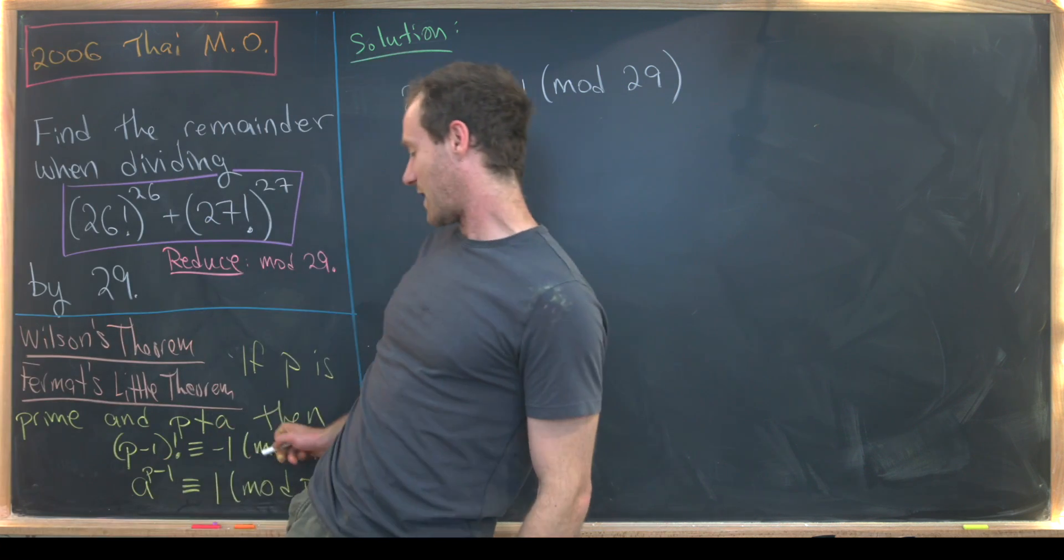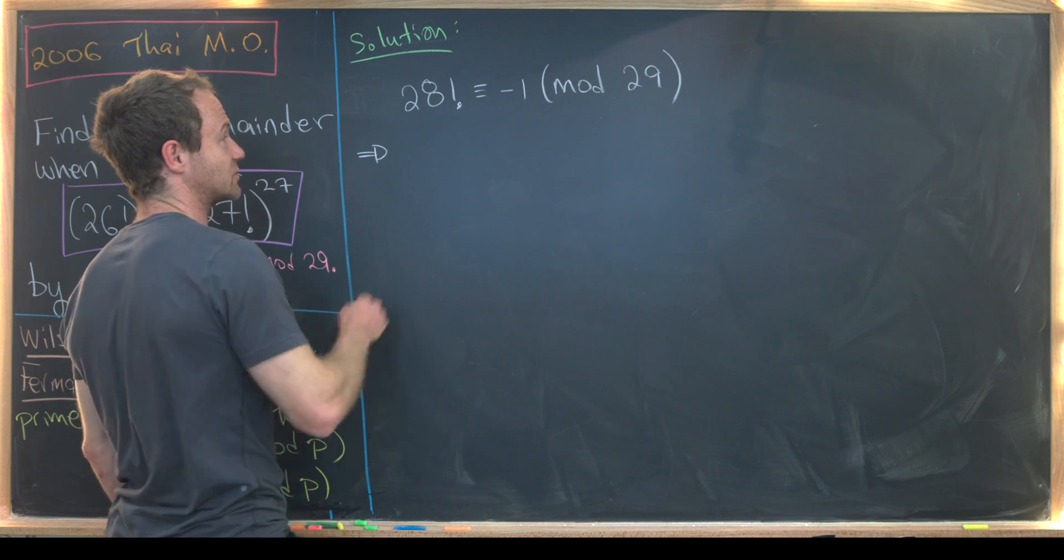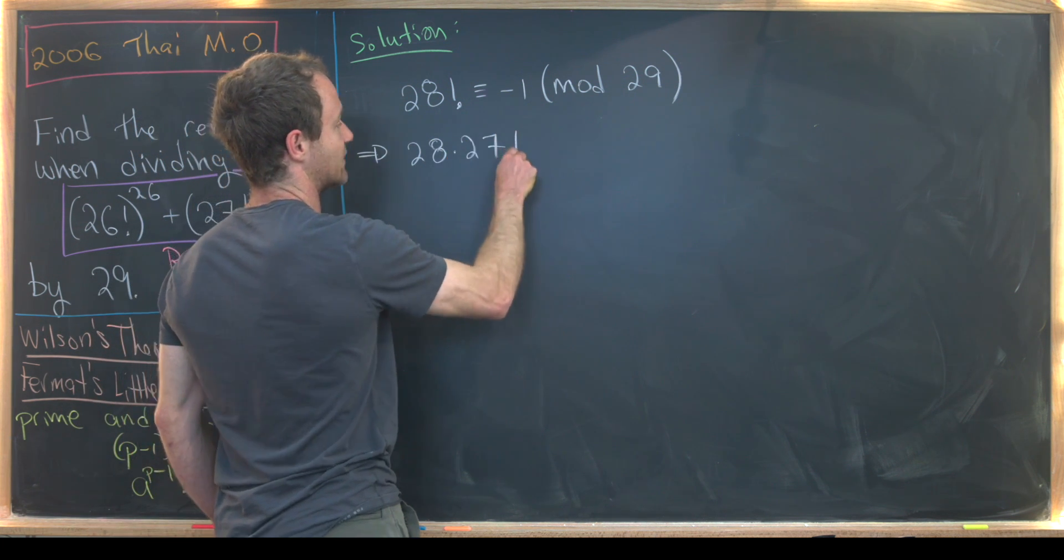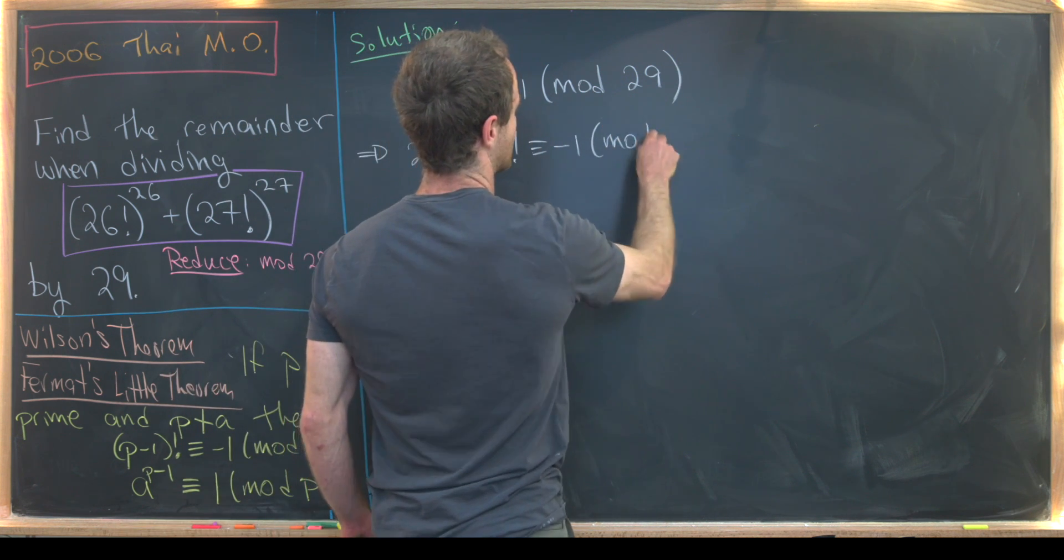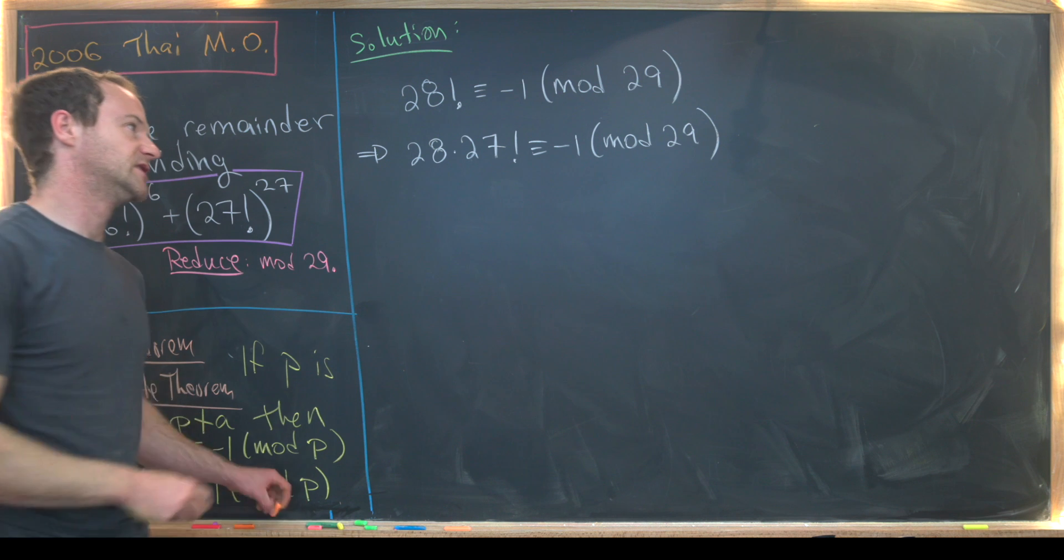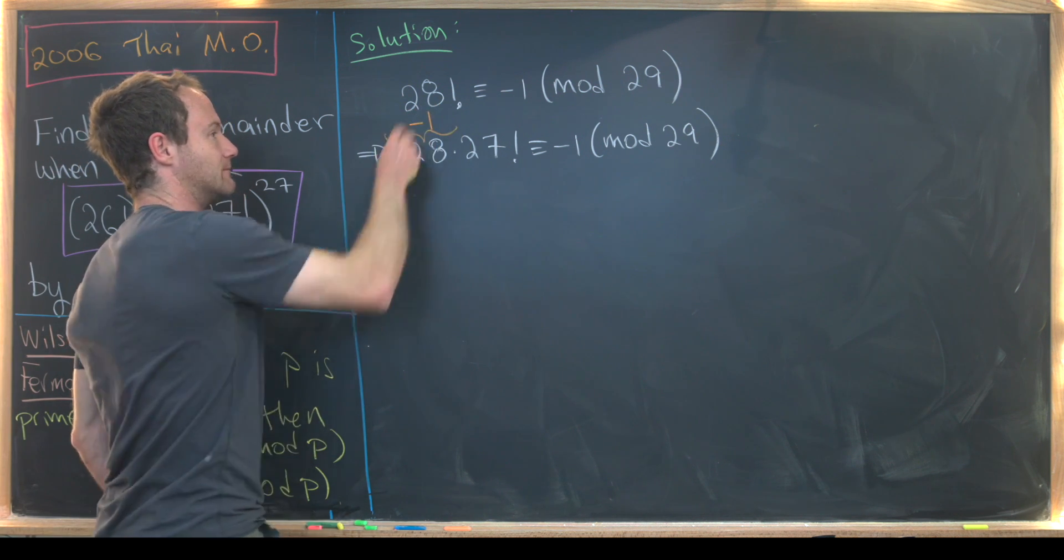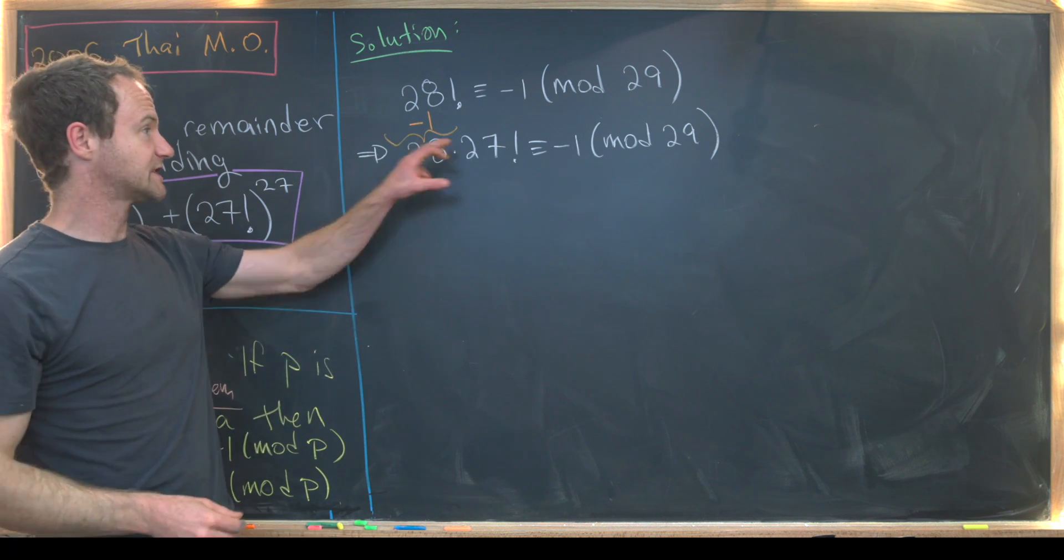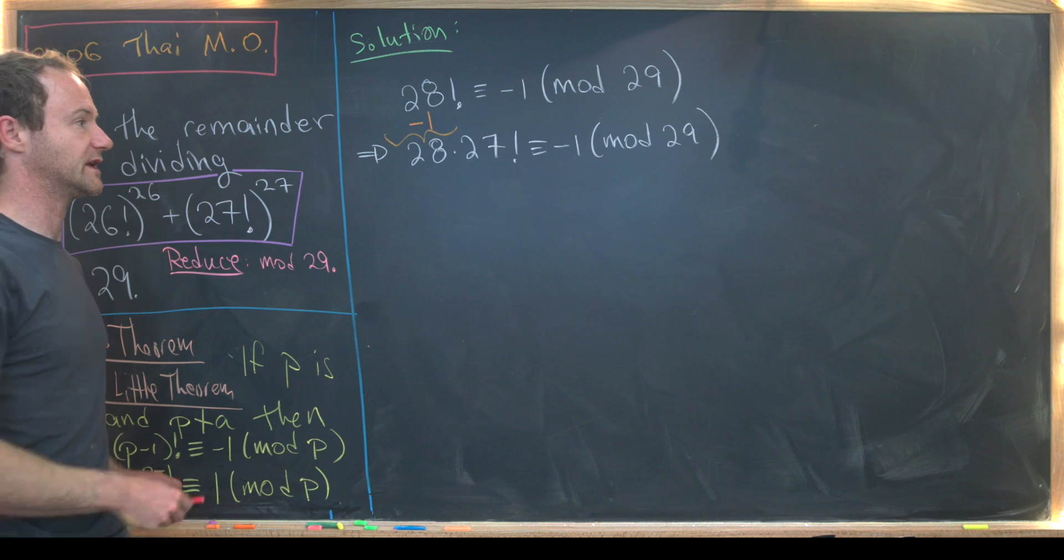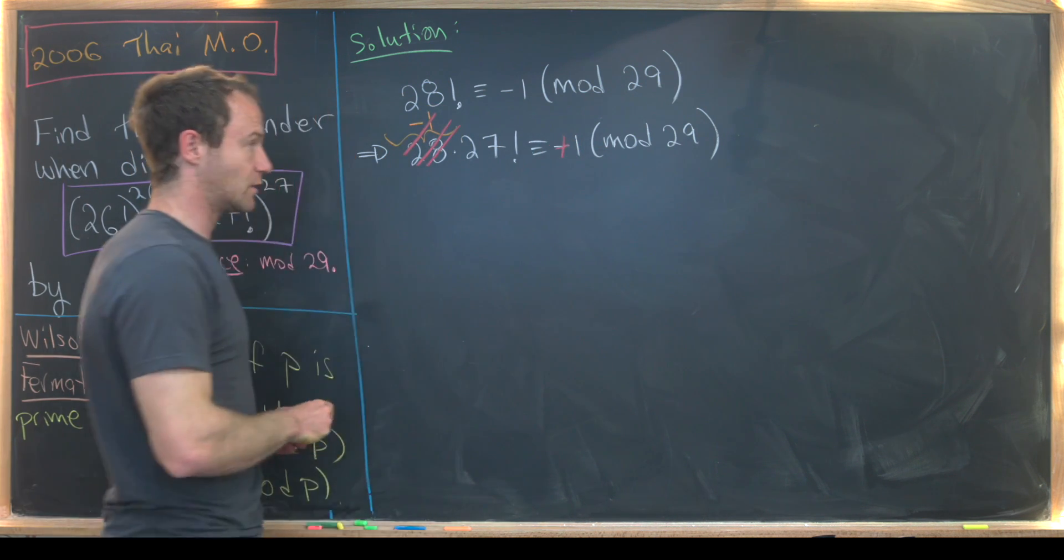That's a direct application of this. Next up, I want to notice that we can factor a 28 out of this. This is 28 times 27 factorial is congruent to minus 1 mod 29. But we can change the residue class of 28. Instead of writing 28, we can write minus 1. So now we've got minus 1 times 27 factorial is congruent to minus 1 mod 29. But we might as well just cancel the minus 1s from both sides of the equation.